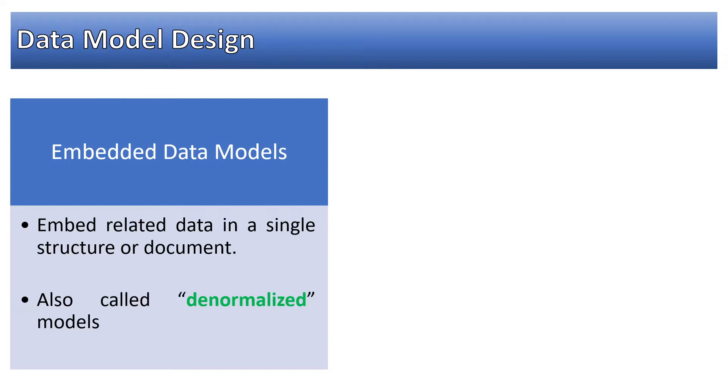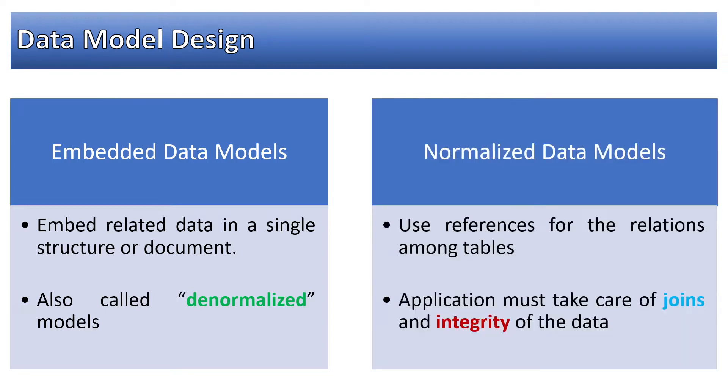It is one collection which is having data of all the relations or most of the relations in that particular collection in the form of embedded documents. Normalized data models, the second form, uses references for the relations among tables. Now with this approach, if we follow normalized data models in almost all the NoSQL databases, there are no referential constraints or integrity constraints.